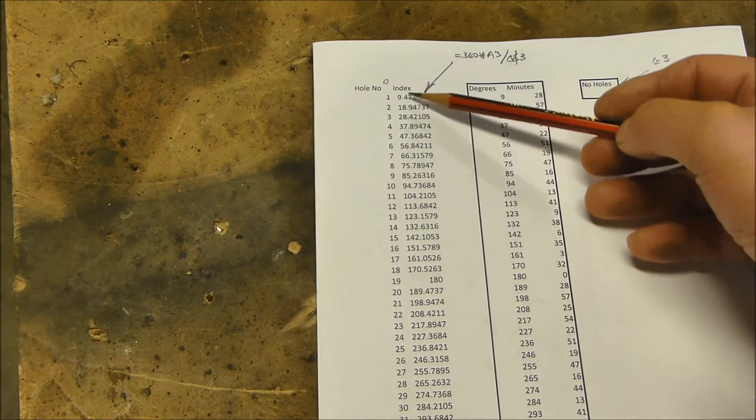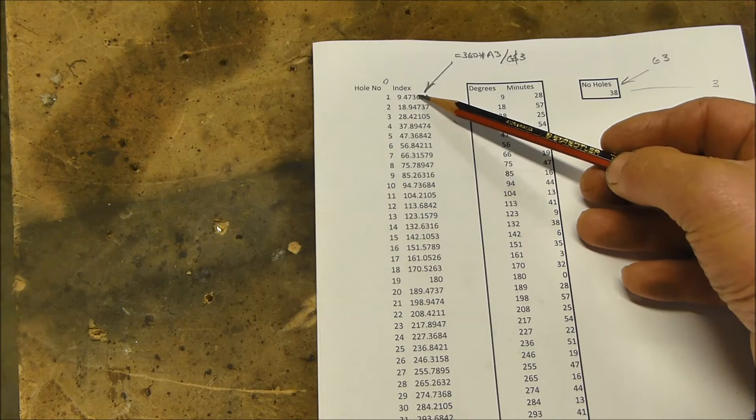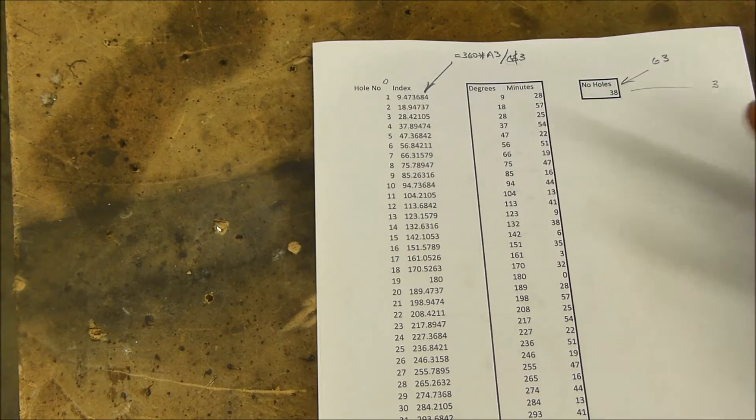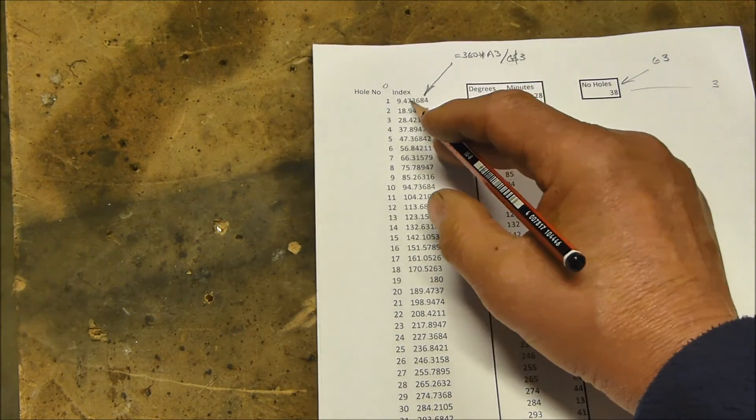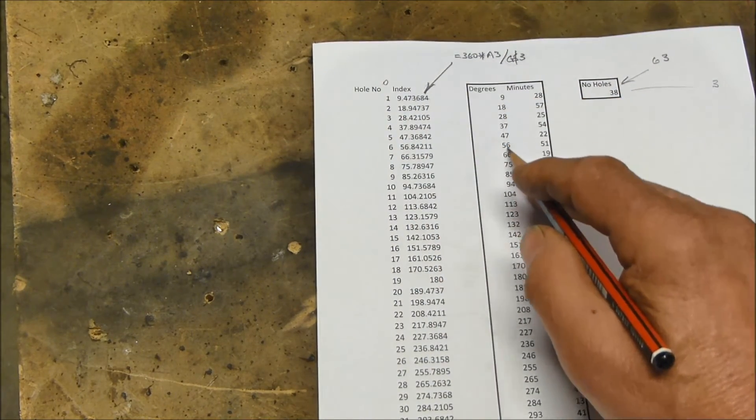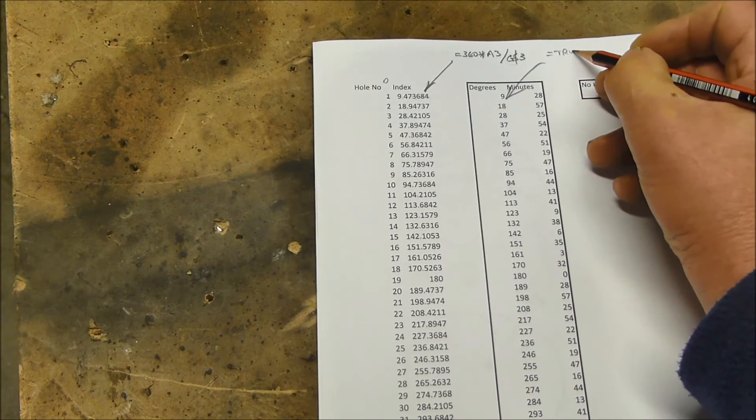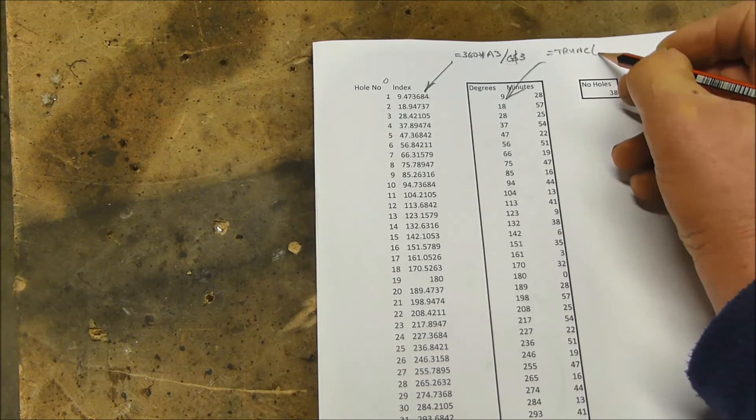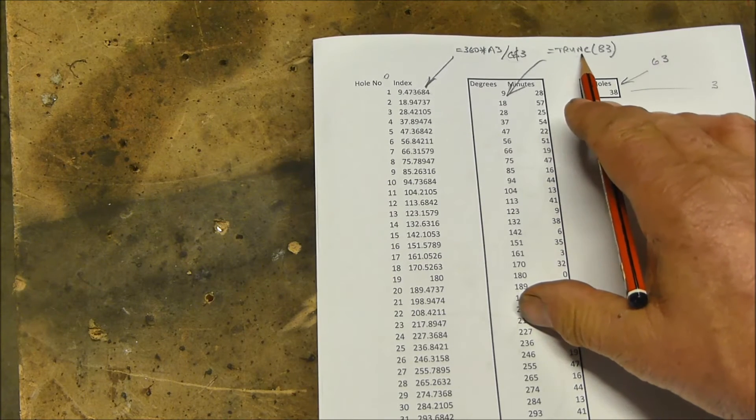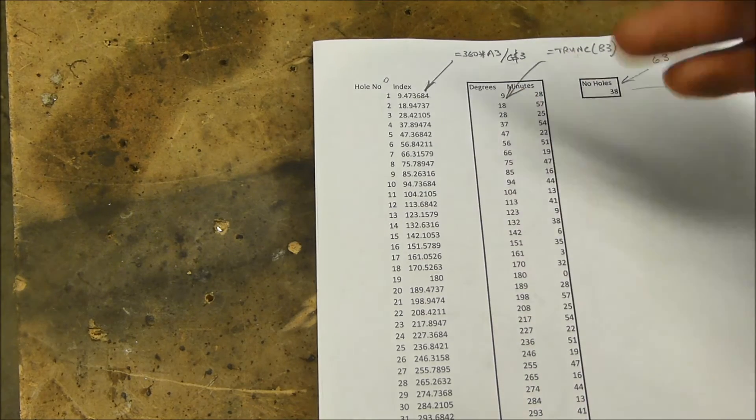So we now have a set of numbers, degrees and decimals of a degree for each hole. Now the decimals are not much use to us, we want whole degrees. So if we get rid of the decimal point, get rid of the values after the decimal point, and put those in that column here. The formula in this column is equal truncate, or trunc B3, and truncate tells Excel just to remove all the values after the decimal point,